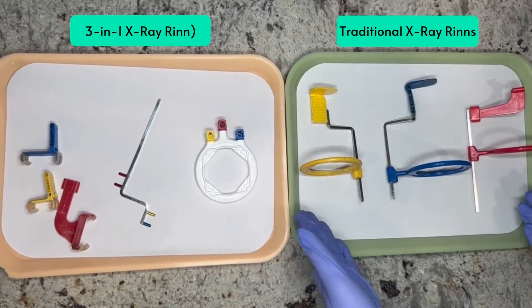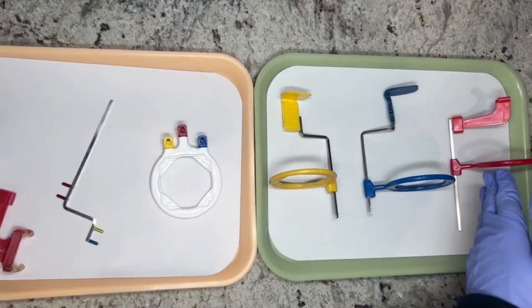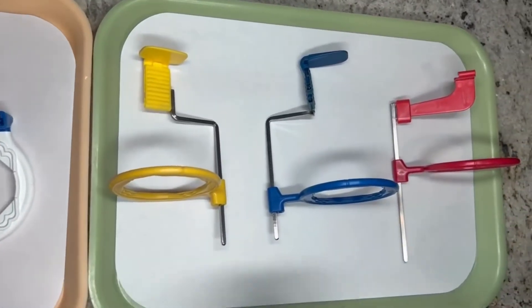So these are your traditional X-ray rings where the colors are all separate and they use three different ones to take your X-rays.